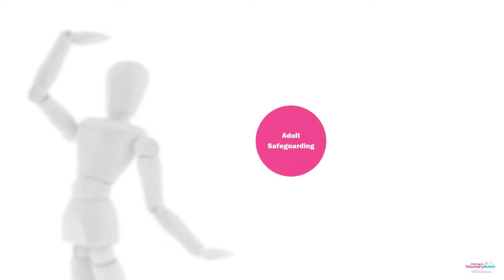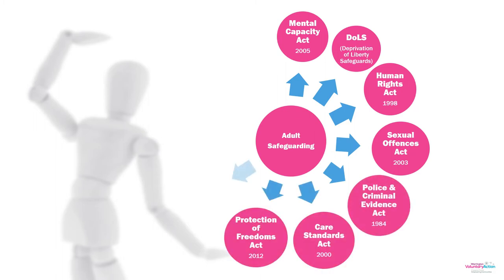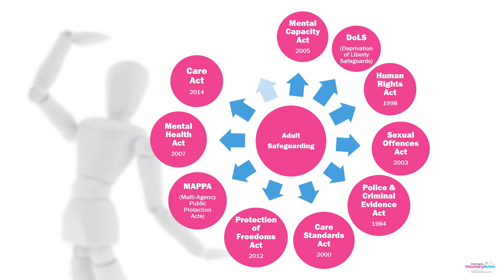There is lots of different legislation attached to this. The Care Act has created a lot of this information. The Protections of Freedoms Act has also created a lot of the information around vulnerability, shifting the ideas on who we screen and how we DBS — how we do that police check of somebody's background. One thing to be aware of is that there is lots of different documentation, lots of different pieces of paperwork and legislation that attach into adult safeguarding and indeed child safeguarding. You don't need to know all of this — I just want you to be aware that it's all there.